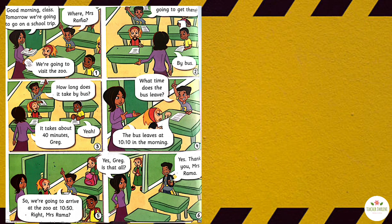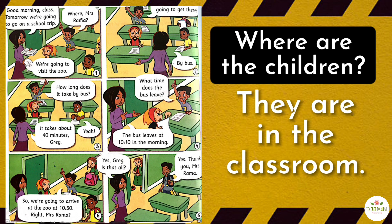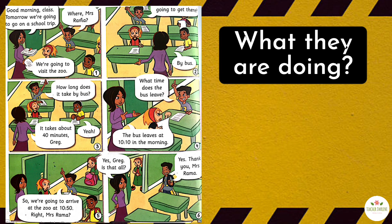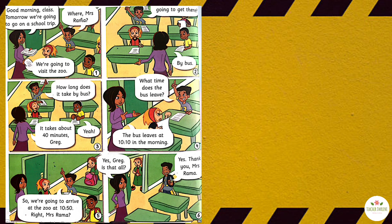Activity 1. Look at the picture. Where are the children? They are in the classroom. What are they doing? They are having a lesson. Can you predict what the children are talking about? Listen.